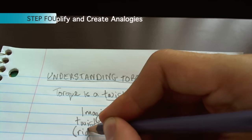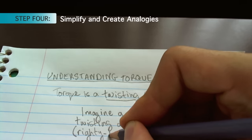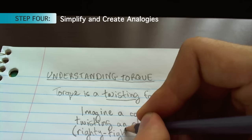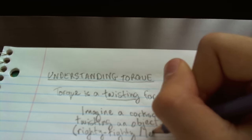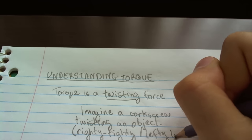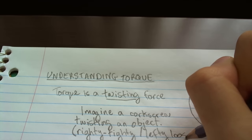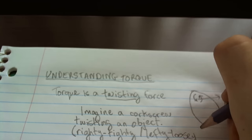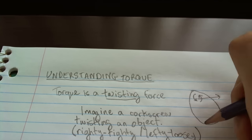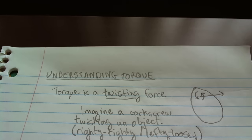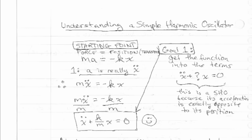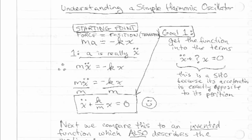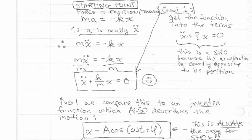You'll notice I used both of these in this quick demonstration. I simplified the language of torque to explain it in terms of twisting. Second, I was able to understand it through analogy by taking the torque vector and describing it as a corkscrew motion — tightening with right or loosening with left. Here are some examples of this technique that I used in an actual class learning physics.